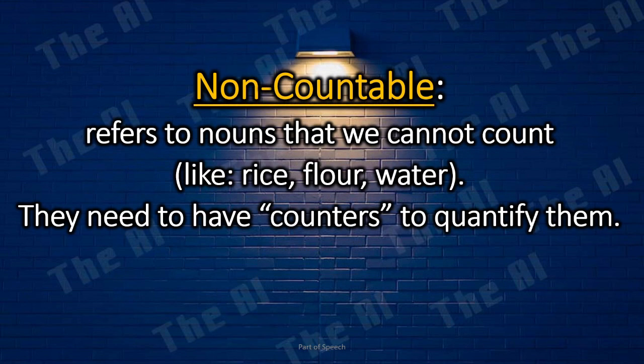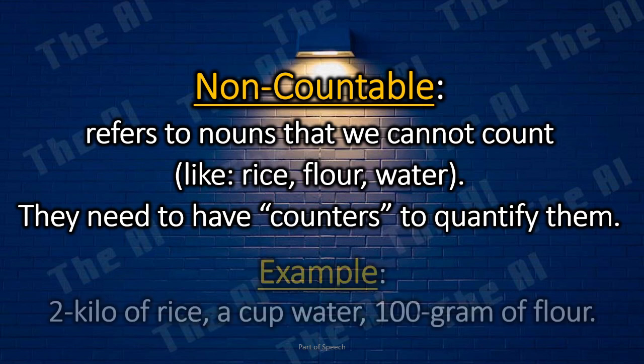Non-countable nouns refer to nouns that we cannot count, like rice, flour, water. They need to have counters to quantify them. Examples: 2 kilos of rice, a cup of water, 100 grams of flour.